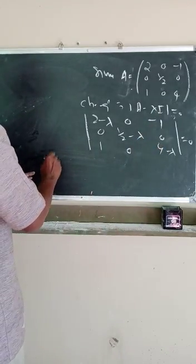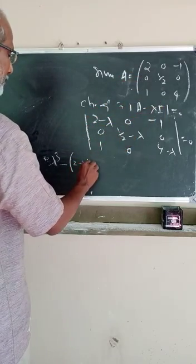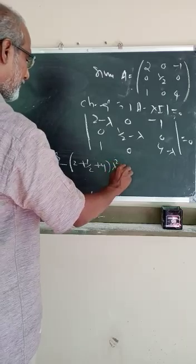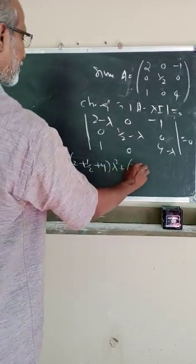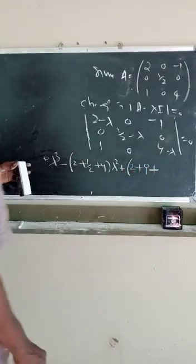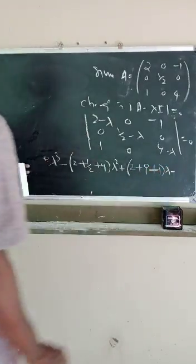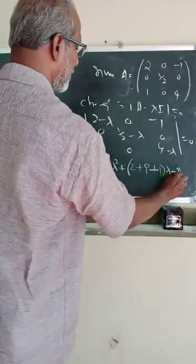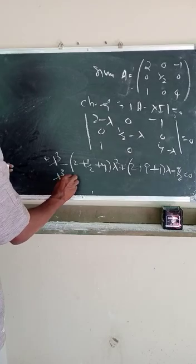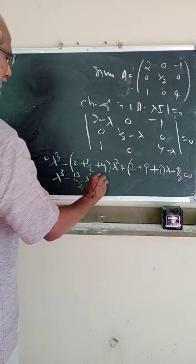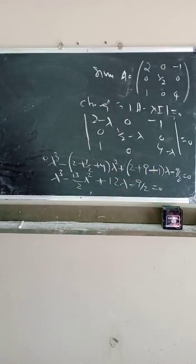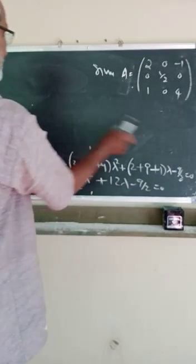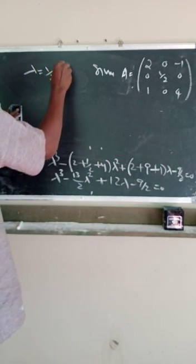That is, we can write lambda^3 minus (2 + 1/2 + 4) lambda^2 plus (minor of 2 is 2, plus minor of 1/2 is 9, plus minor of 4 is 1) lambda minus determinant of A equals 9/2 minus 9/2, equals 0. That is, lambda^3 minus (13/2) lambda^2 plus 12 lambda minus 9/2 equals 0. Solving this equation, we get the eigenvalues lambda equal to 1/2, 3, 3.